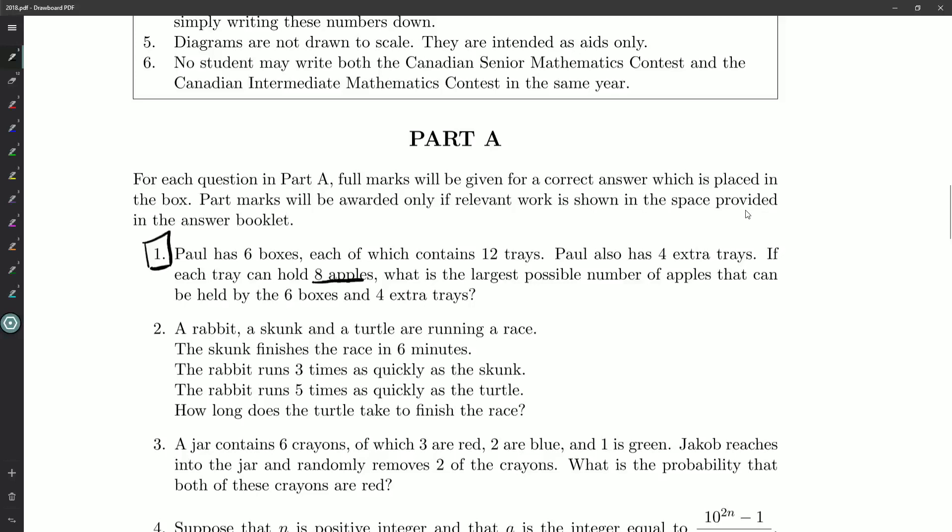Okay, so we know how many apples a tray can hold. What we need to do is figure out how many trays he has. He's got four extras, but he also has six whole boxes filled with 12 trays a piece. So, Paul has 6×12 plus the four extra, and that'll be 72 plus 4. Paul has 76 trays.